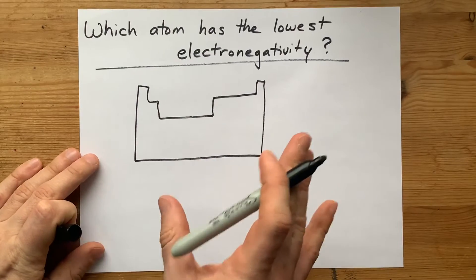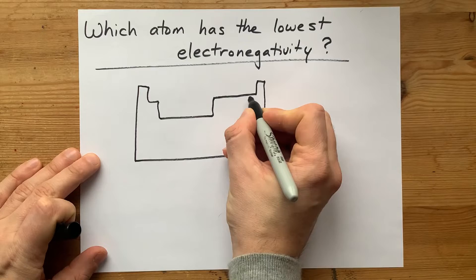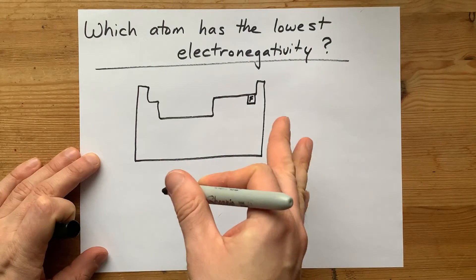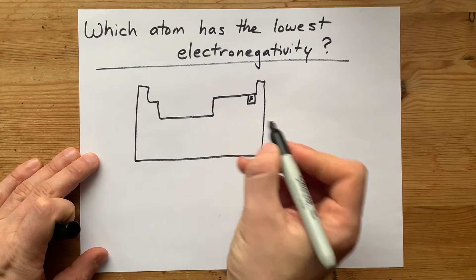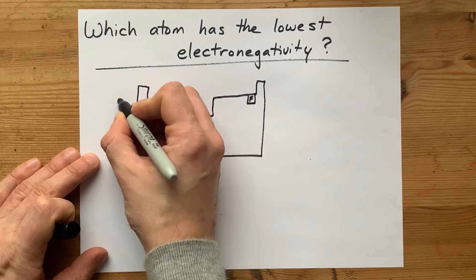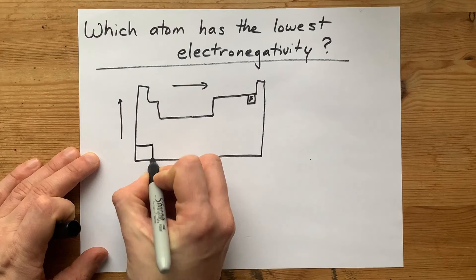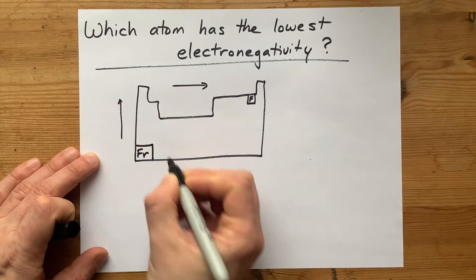Maybe first year university chemistry, and they're teaching you that fluorine has the highest electronegativity, and the periodic trend is that it increases as you go up or to the right on the periodic table. So the correct answer for you to give is francium.